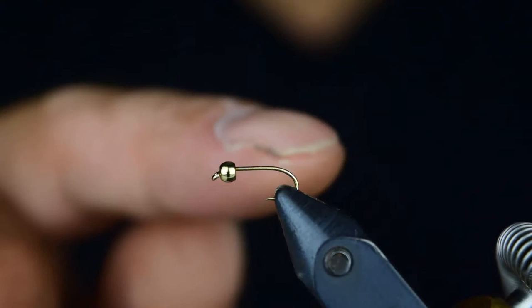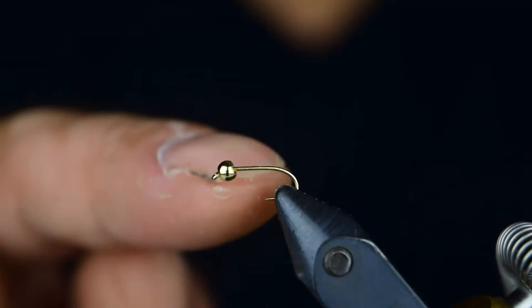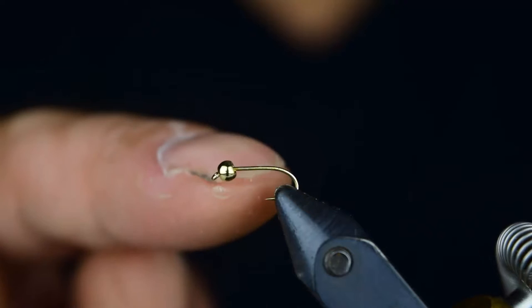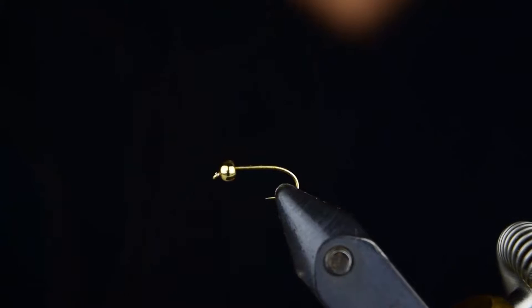In the vise we have an Allen Fly Fishing 304 size 16 or size 18 hook, and we have a little bit bigger bead than you would normally have for a size 18. This is a 2.4 millimeter leaf bead by Allen Fly Fishing.